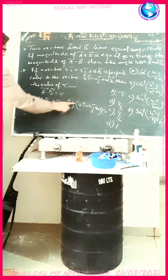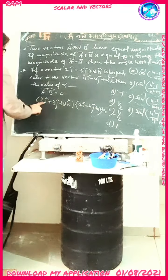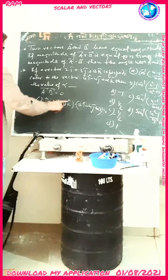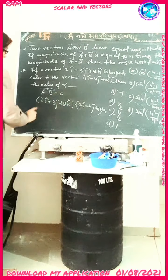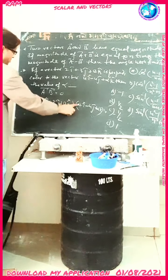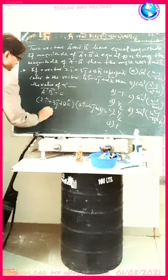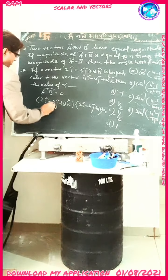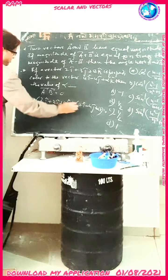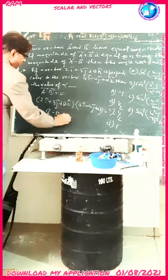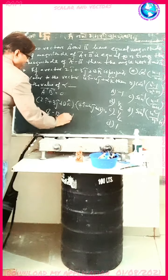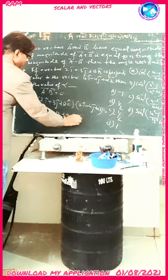Now, i dot i is equal to 1, i dot j is equal to 0, and i dot k is equal to 0. So solving, we get 8 minus 4 plus 3 alpha is equal to 0, and alpha is equal to 2.